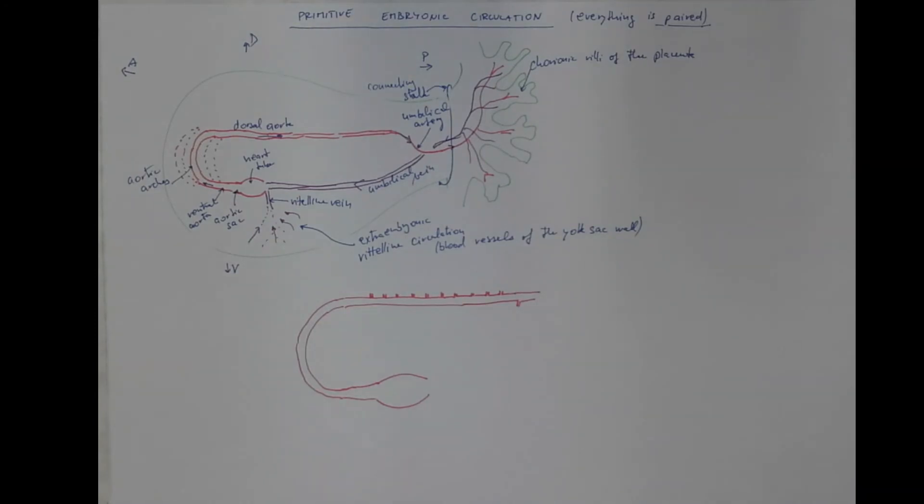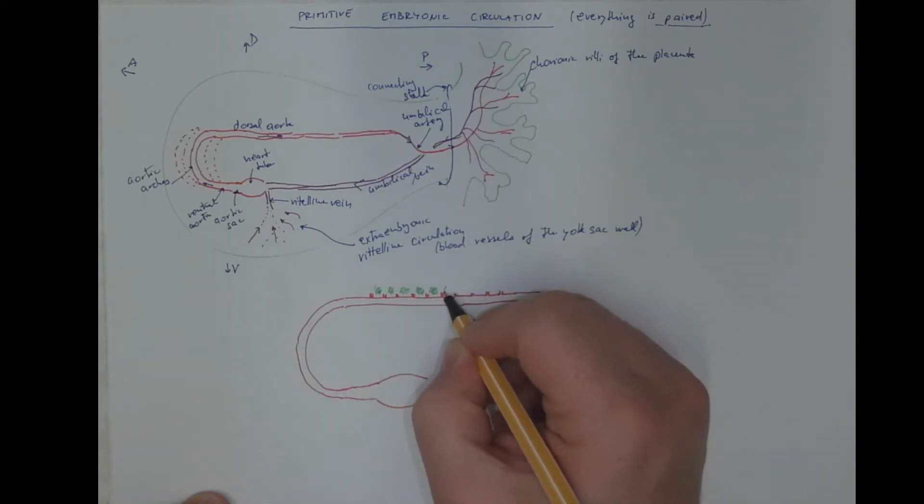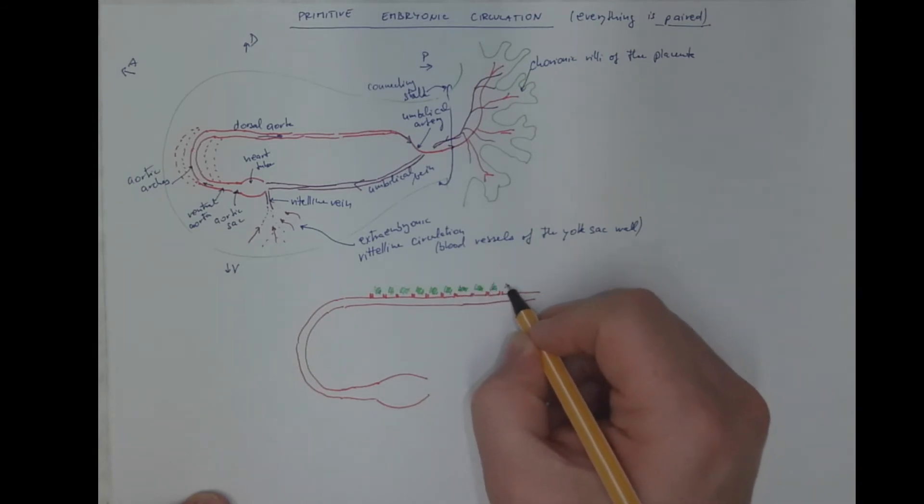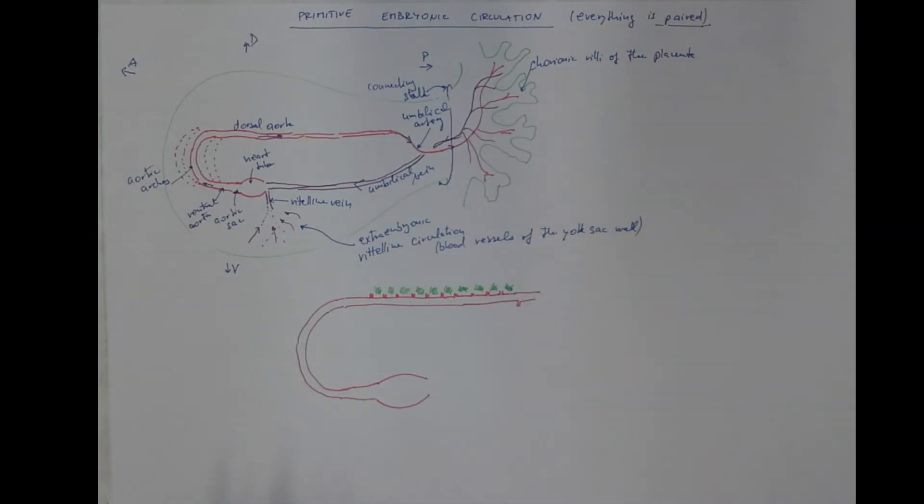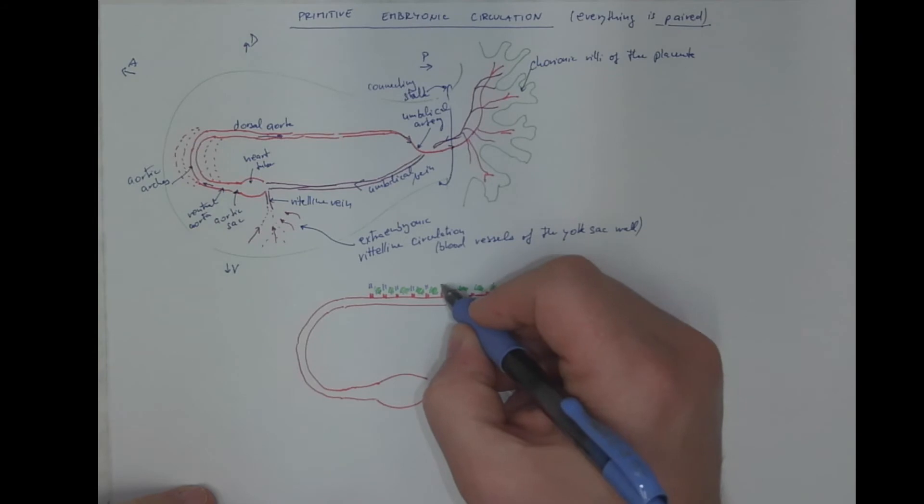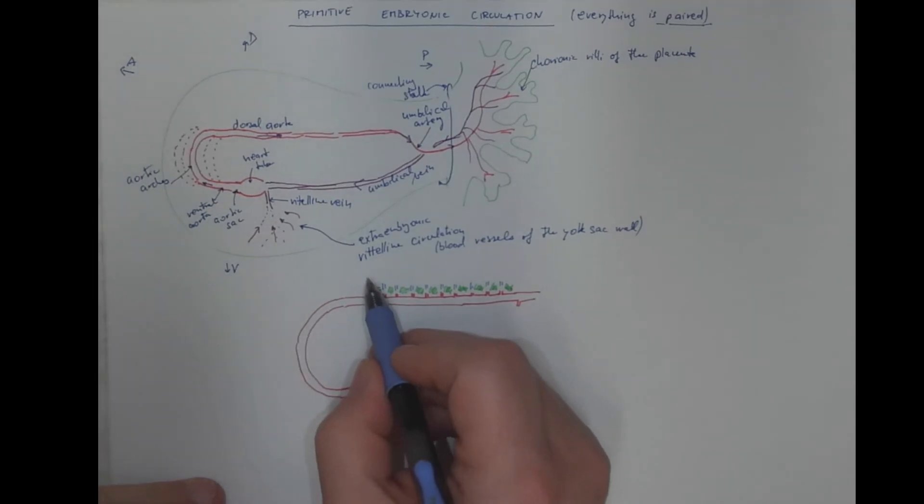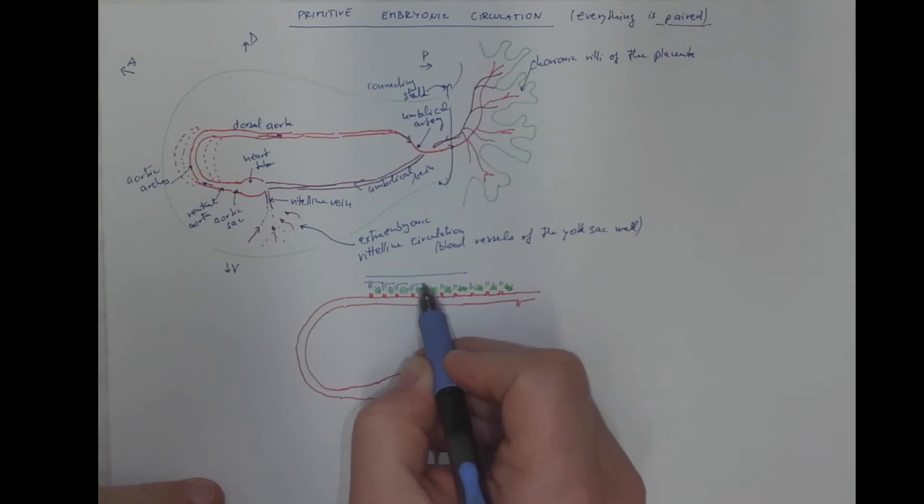So now I will include the segmented mesoderm of the somites. That's a significant mass of tissues that require blood supply. The blood is collected from this region via veins that gradually fuse into two major veins called cardinal veins.